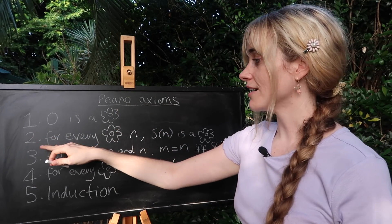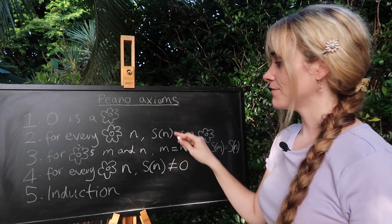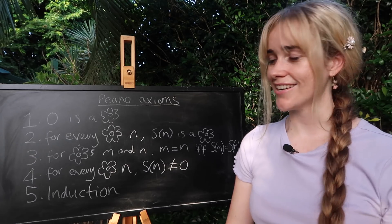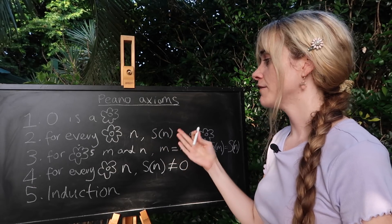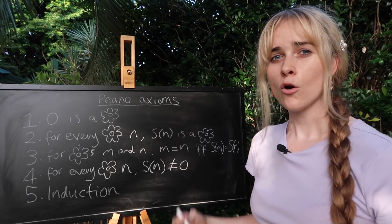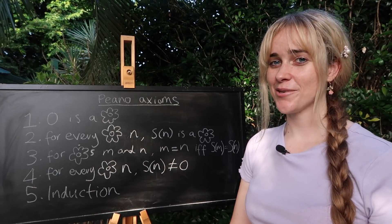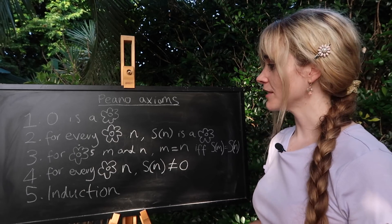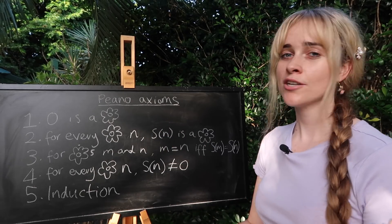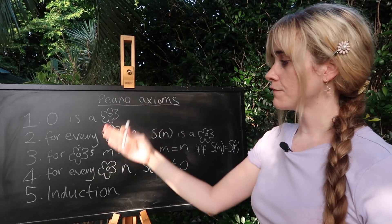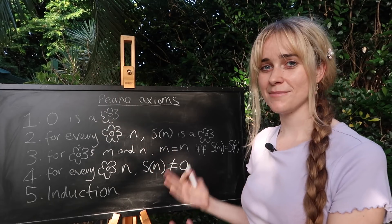So number two, our second rule, is that for every natural number n there is this S(n) which is said to be the successor of n and it is also a natural number. You might think that you are familiar with the idea of a successor or the concept of next. Maybe through Ariana Grande's hit song Thank You Next. Maybe that will help you intuitively but to be honest you don't really need to know that this means next.